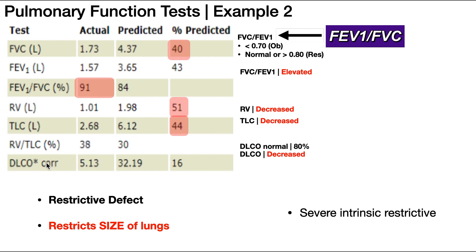We can then look at the DLCO percent predicted to determine whether gas exchange is impaired. In some restrictive defects, gas exchange is not impaired — that would be an extrinsic restrictive defect, where the problem isn't with the lungs themselves but with expansion of the chest wall, like hypomobility, excess adiposity, or obesity. But here gas exchange is clearly impaired; the DLCO is well less than 80%. Because it's decreased, we can say it's an intrinsic restrictive disease — intrinsic means gas exchange will be impaired.